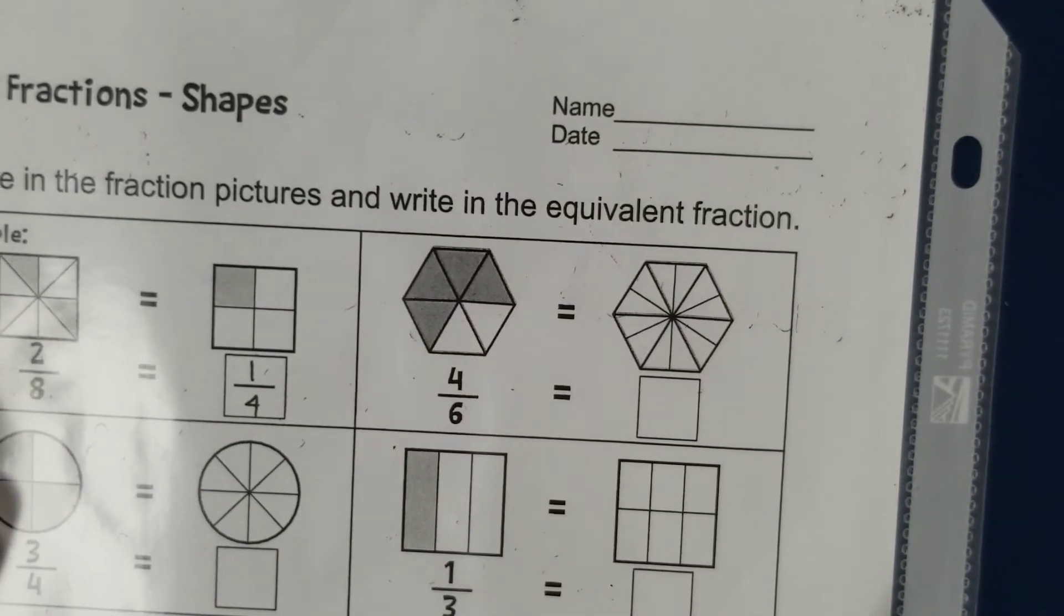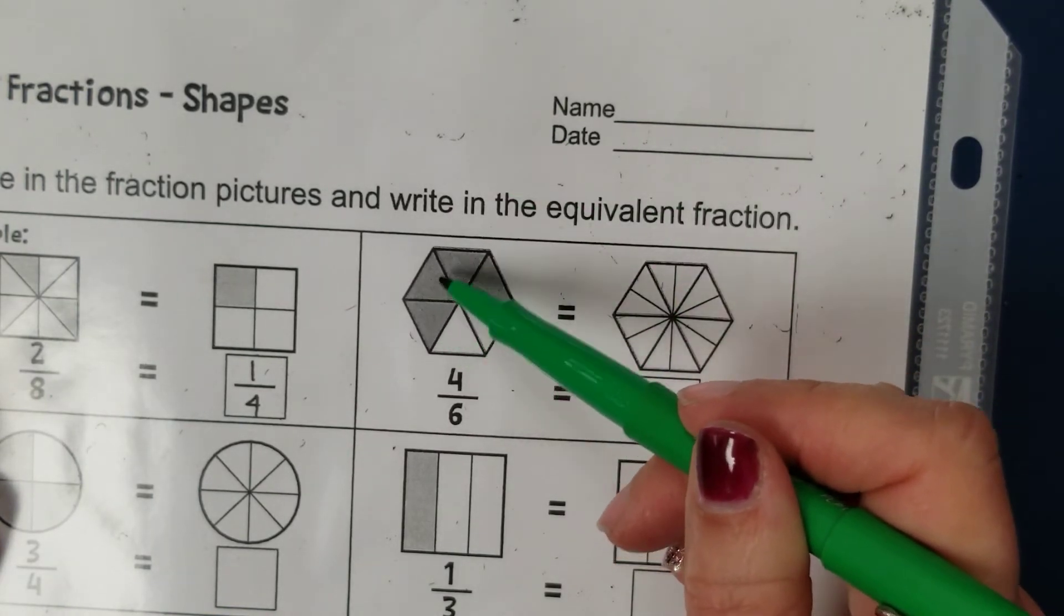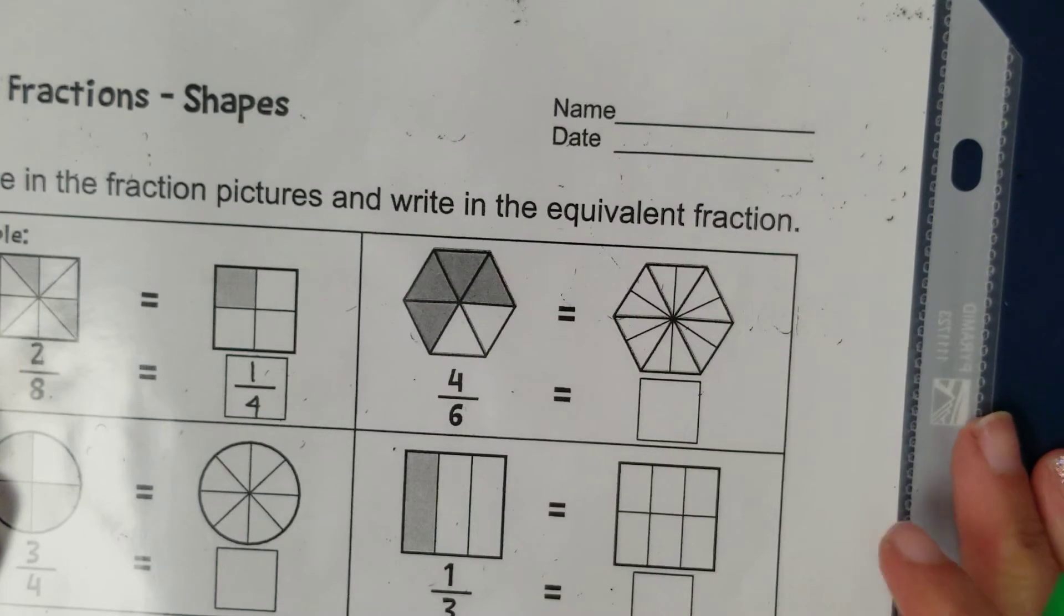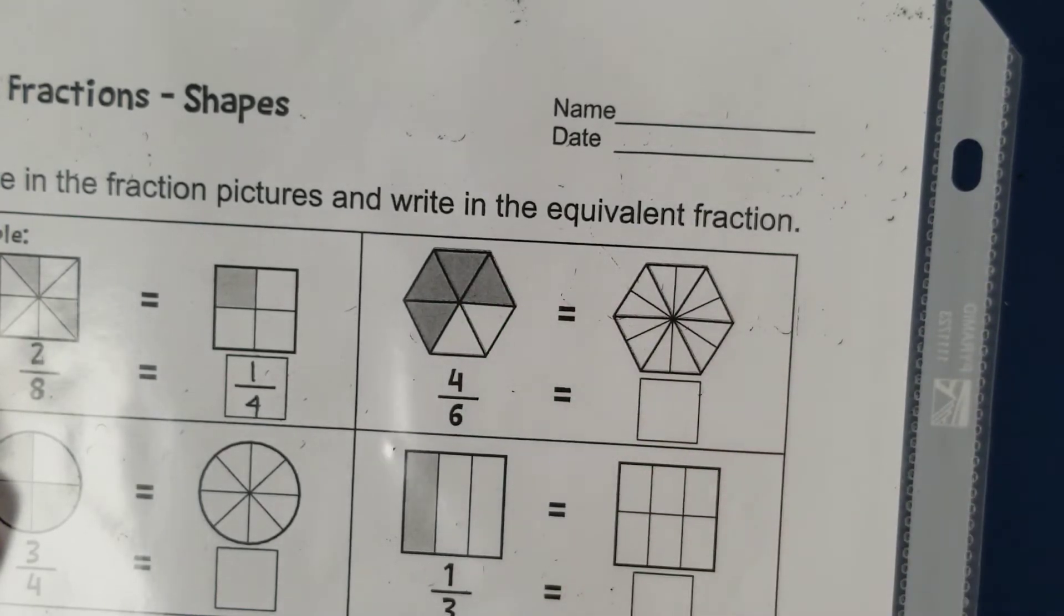Let's try another one. Here we have a shape that is broken into one, two, three, four, five, six parts. Six is down there in the denominator. Four of them are shaded and so we put here four in the numerator.